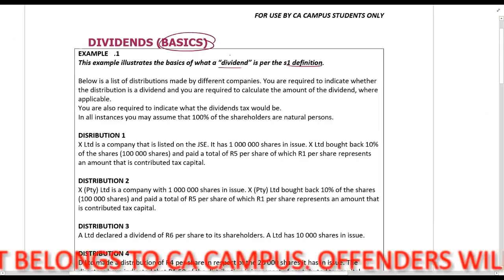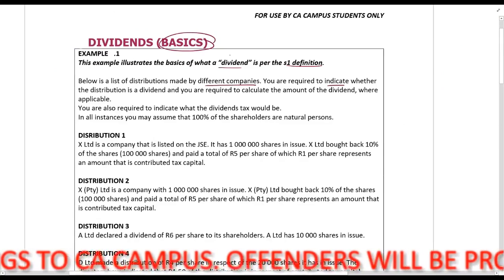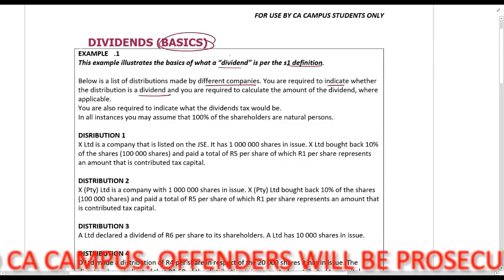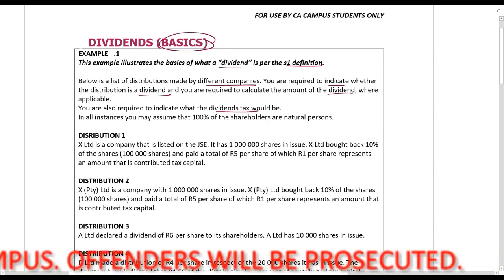Below is a list of distributions made by different companies. You are required to indicate if it's a dividend, what the dividend amount is, and calculate the dividends tax on this.